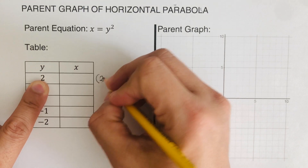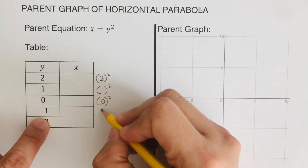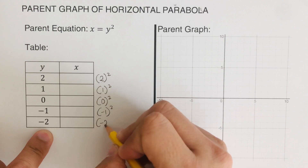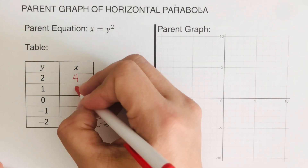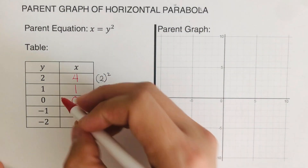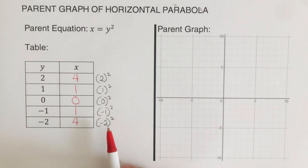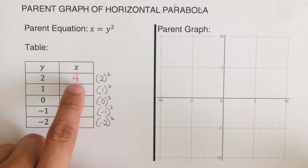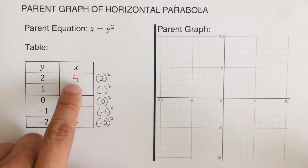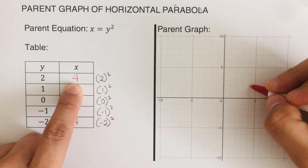To solve for x we square the y values: 2 squared is 4, 1 squared is 1, 0 squared is 0, negative 1 squared is positive 1, and negative 2 squared is positive 4. Now we're ready to sketch the graph. Remember x is the first coordinate and y is the second, so the first point is at (4, 2).